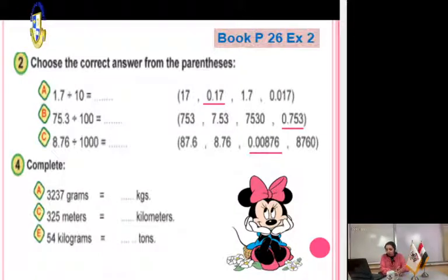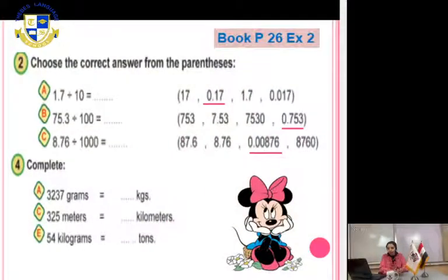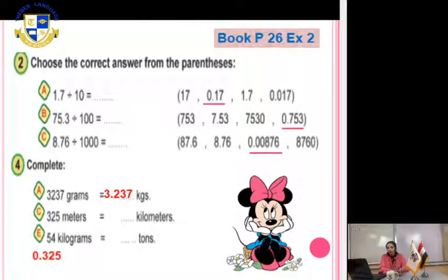Complete: 3237 grams equals how many kilograms? Gram is the smaller unit; kilogram is the bigger unit — so divide by 1000. Put the decimal point after 3 digits. The answer is 3.237 kilograms.